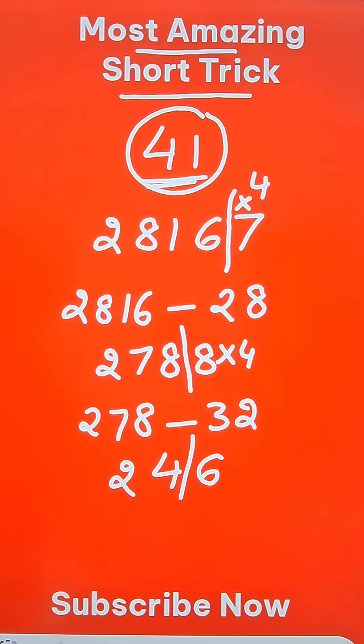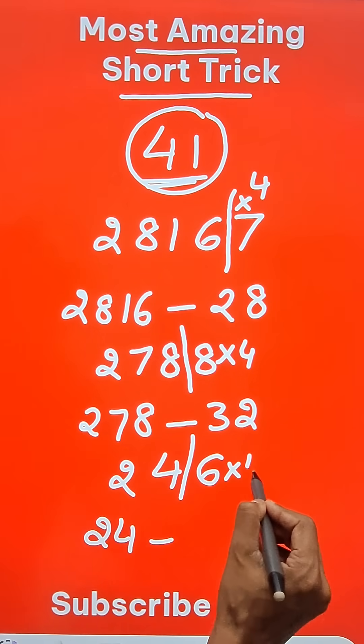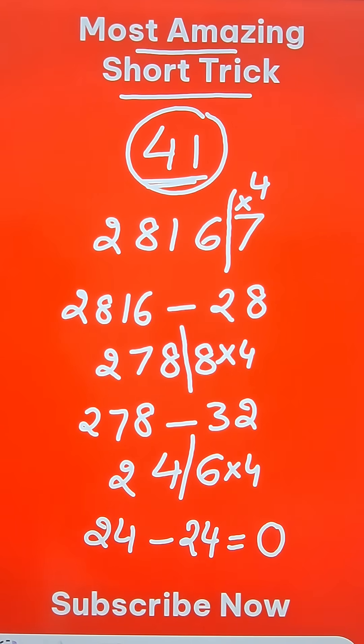Separate out the unit digit once more. I have 24 minus 4 times 6, which is 24, and it gives me 0.